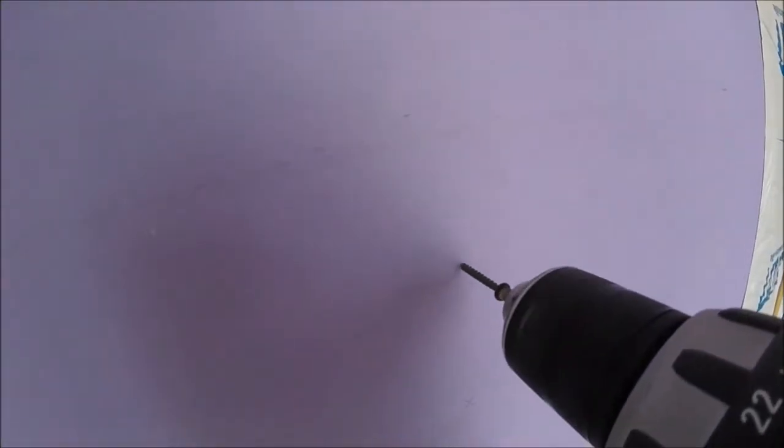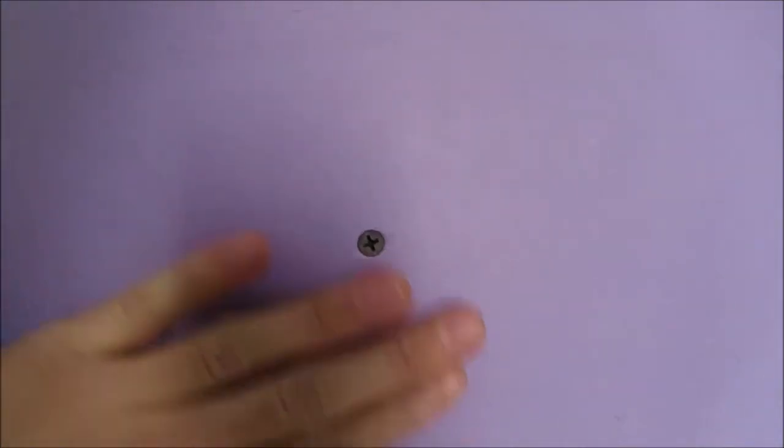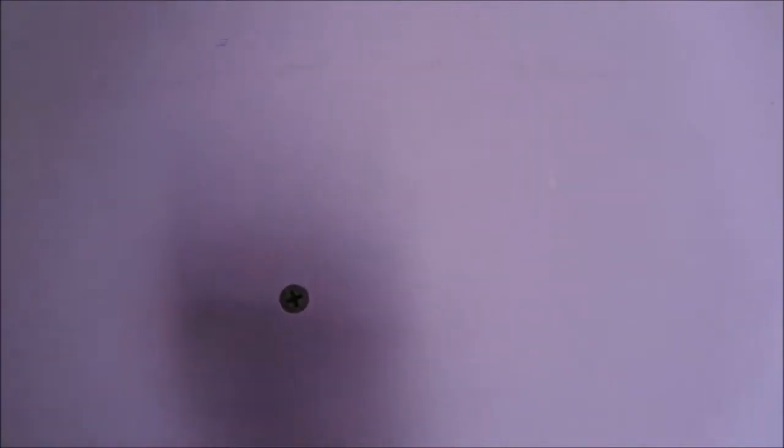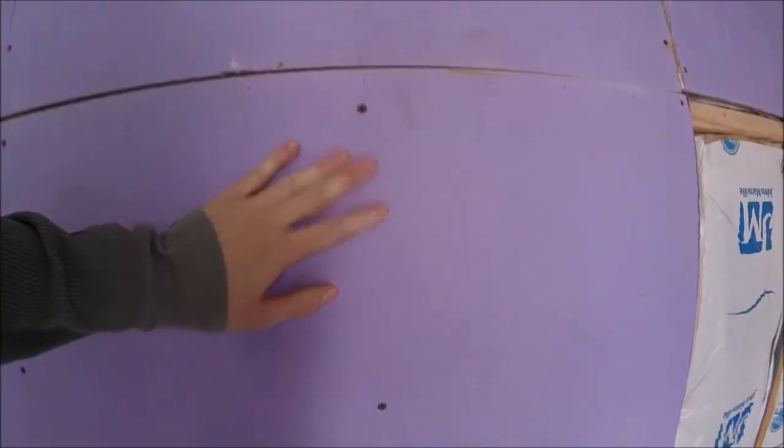When we're screwing in our drywall, we're just going to countersink it and make it dimple. You shouldn't be able to feel the head at all, but you're not going to go so deep as to where you rip this face because that's going to compromise the strength of the drywall. You're going to want to put about a screw every foot.